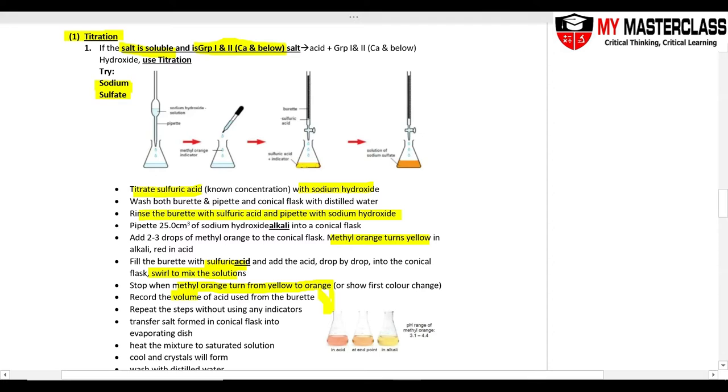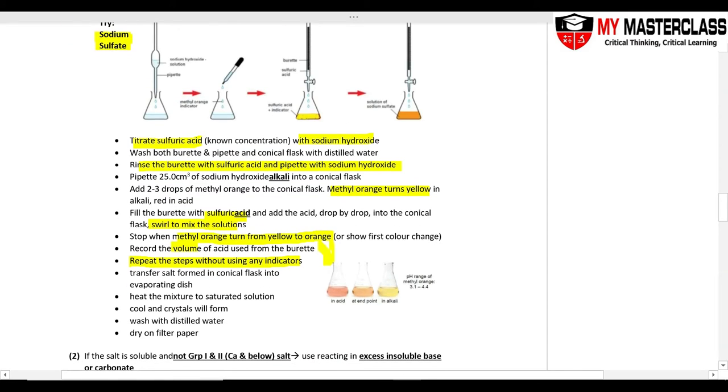Record the volume of your acid used, and then repeat these steps without the indicators now, because I want to prepare salt. The salt and water, the sodium sulfate formed, must not be contaminated with the indicator. So I repeat it with the known volume of titration results that you just used.